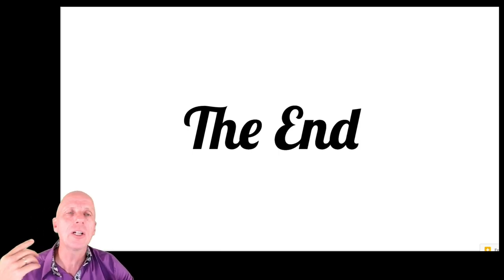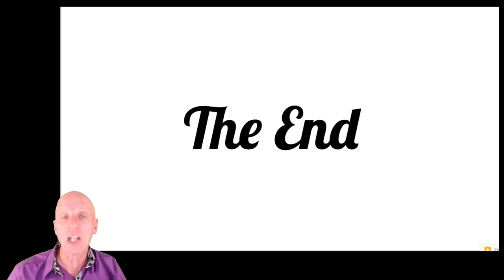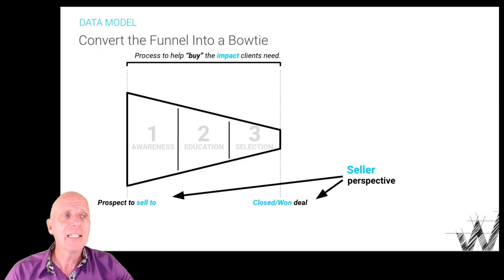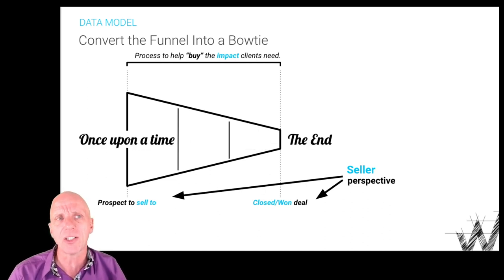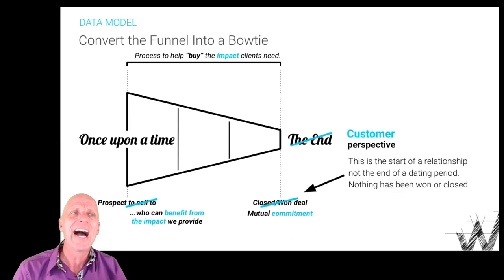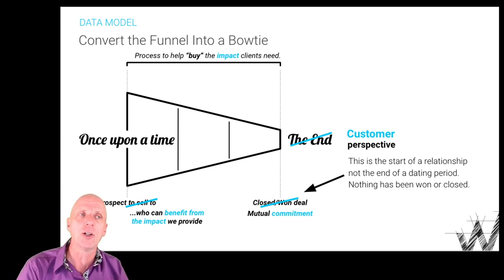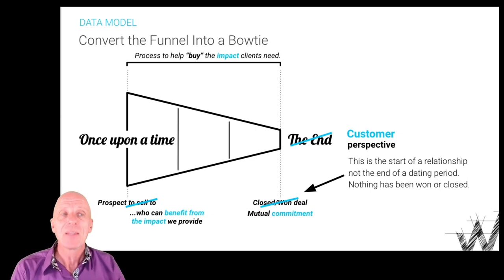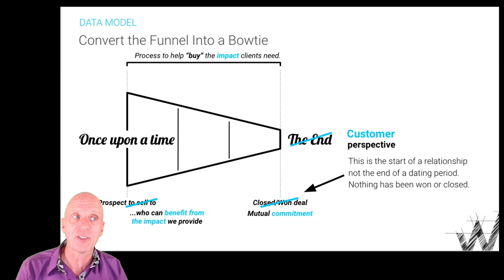For those of you who have been long in sales, you know your relationship with your customers is often what you keep way longer than your relationship with the companies you represent. That means we need to change this seller perspective. We need to stop thinking about prospects as people we sell to, but as people we can help achieve impact, who can benefit from it. And there's no end. That is not a closed-won deal — like a relationship, it is the start of a commitment. We are mutually committing to something.